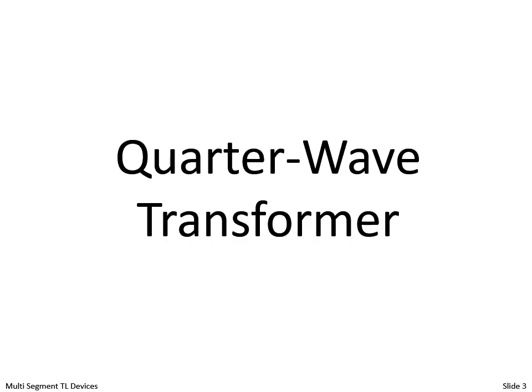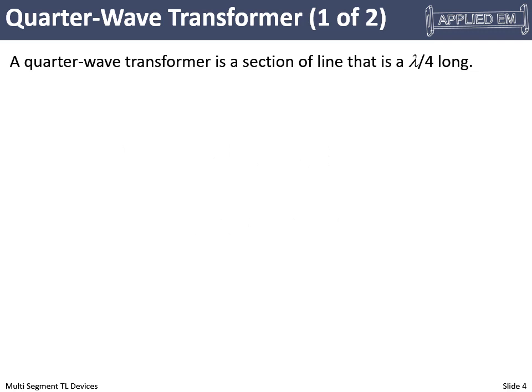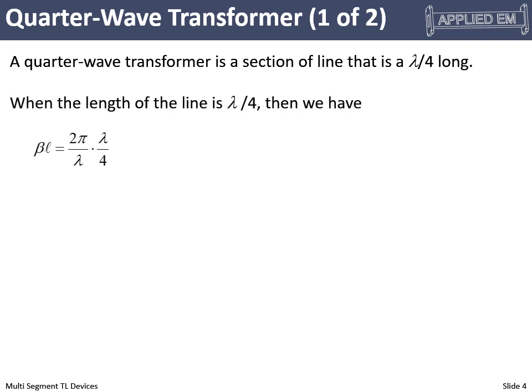Quarter wave transformer. Let's ask ourselves what happens when a signal travels through a section of transmission line that is a quarter wavelength long. When it's a quarter wavelength long, let's look at this product of beta times L. Beta, the phase constant, is 2π over the wavelength — and this is the wavelength in the transmission line, not the free space wavelength.